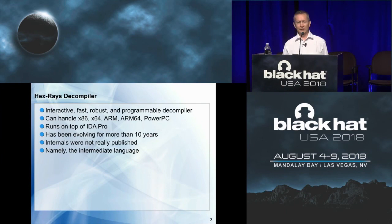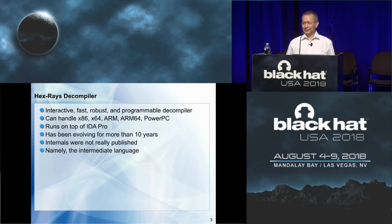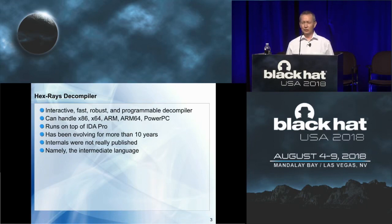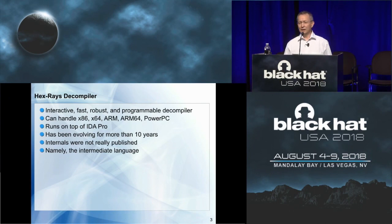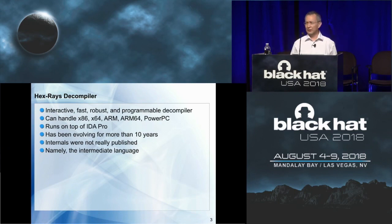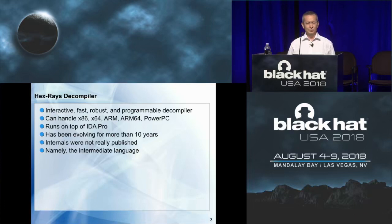I hope that you've heard about our Decompiler. We have a Decompiler — it has been existing for 10 years now. It is interactive, fast, robust, and programmable. It evolved over time; even the initial version was quite powerful, and over time we added support for many processors, so we can say it's a retargetable Decompiler. As you see, it handles five processors currently, and it handles native code — not bytecode like Java or .NET, though that is possible. We are focused on native code.